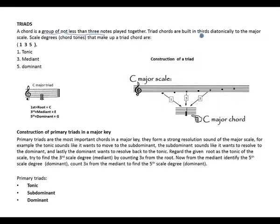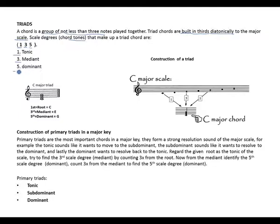Triad chords are built in thirds, diatonically to the major, minor, or any scale that you're building from. The scale degrees known as chord tones make up a triad. The chord tones — the notes that make up a triad — are 1, 3, and 5: 1 for tonic, 3 for mediant, and 5 for dominant.